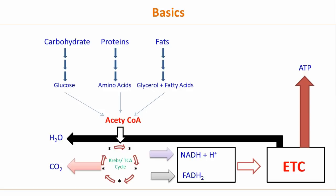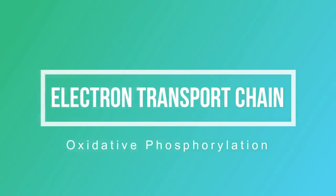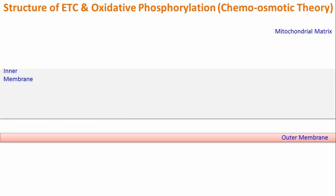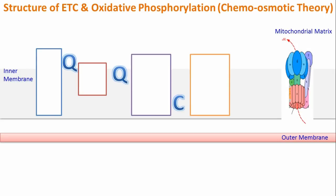That was an overview of how the electron transport chain fits into overall metabolism. Now let's look at the structure of the electron transport chain and the various steps involved in oxidative phosphorylation. This is a diagrammatic representation of the mitochondrial membranes — we have the inner mitochondrial membrane, the outer mitochondrial membrane, and the mitochondrial matrix. All components of the electron transport chain are present on the inner membrane of the mitochondria.